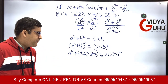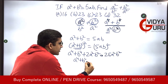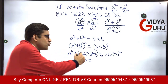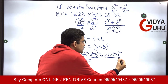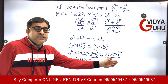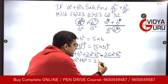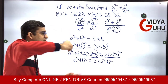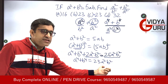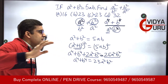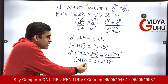Now a⁴ + b⁴ is on the left hand side. Moving 2a²b² to the right, we subtract it from 25a²b², and we are left with 23a²b². So the value of a⁴ + b⁴ equals 23a²b².